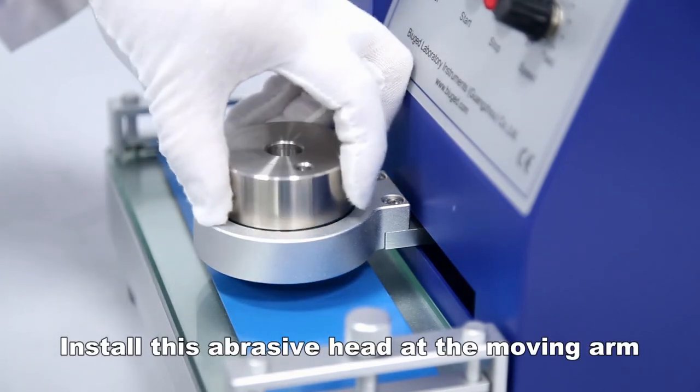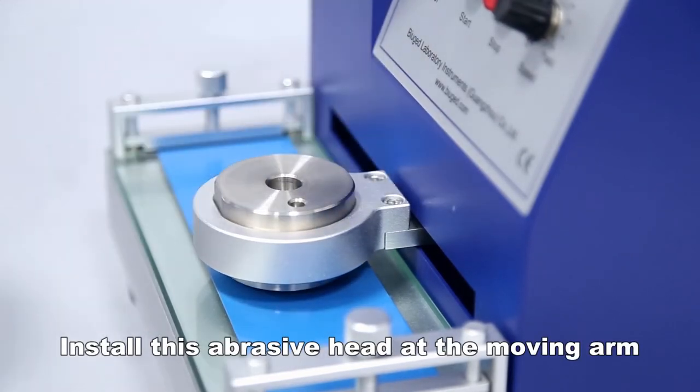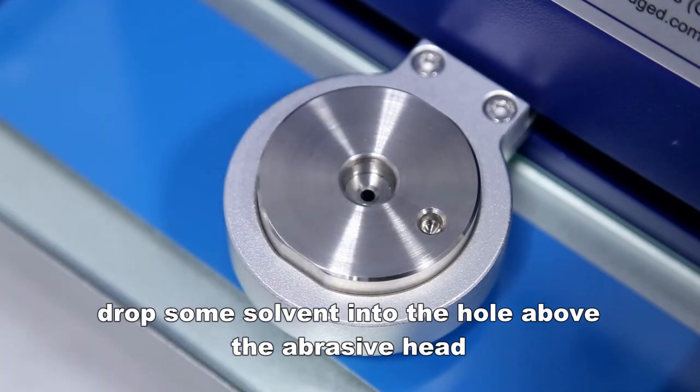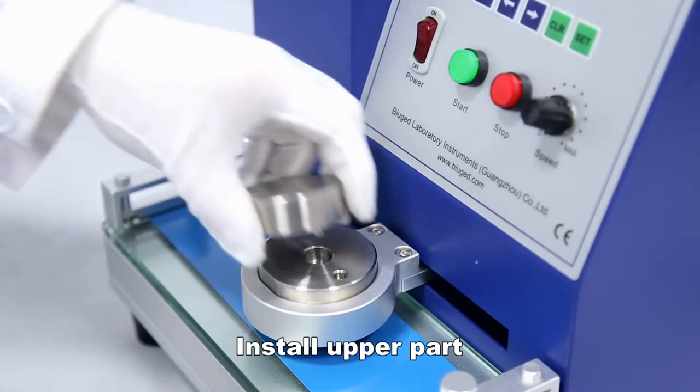Install this abrasive head at the moving arm. Drop some solvent into the hole above the abrasive head. Install the upper part.